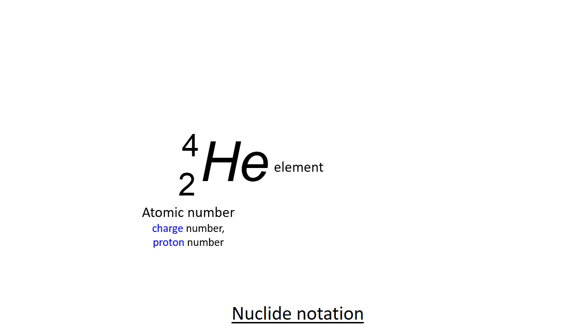Specific to the element is also the atomic number, also known as the charge number or the proton number. All helium nuclei have an atomic number of two. They have two protons in the nucleus.